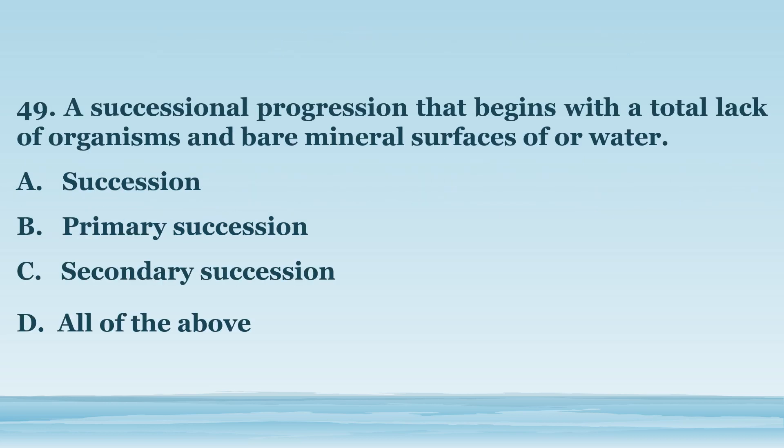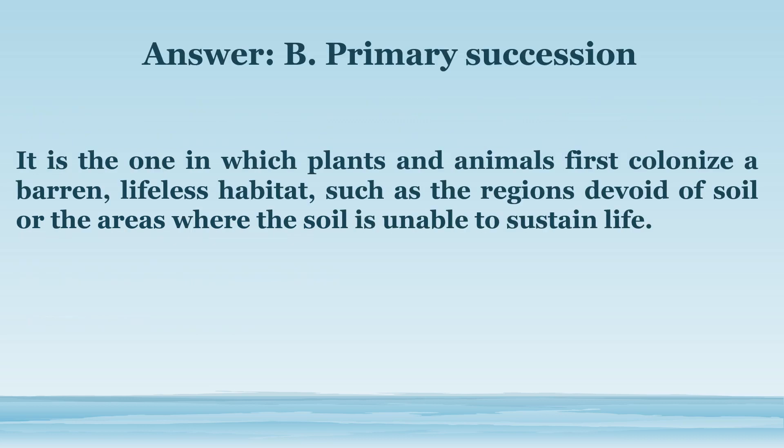Number 49. A successional progression that begins with a total lack of organisms and bare mineral surfaces or water. A. Succession. B. Primary succession. C. Secondary succession. D. All of the above. The answer is letter B. Primary succession. It is the one in which plants and animals first colonize a barren, lifeless habitat, such as regions devoid of soil or areas where the soil is unable to sustain life.